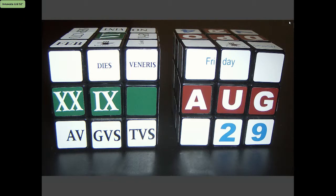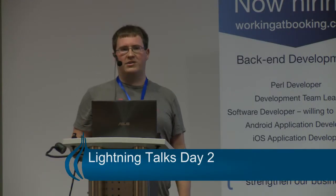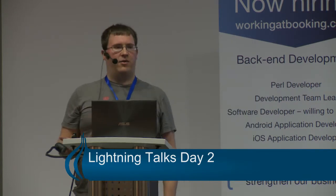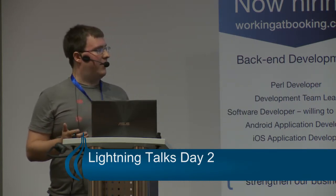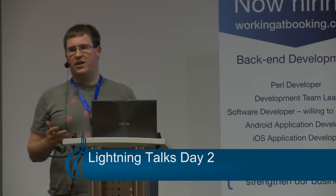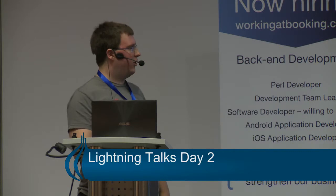One of the things that we're really proud of is the module of the month recurring posts that we're doing. Every month we do a post where we talk about code that we use and love at Nestoria. We talk a bit about how we use it, why we love it, and then we also give a $1 a week GitTip donation for 12 months for one of the major contributors for that project.